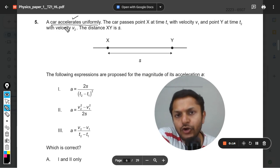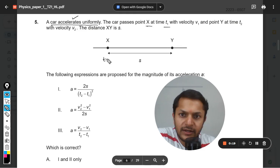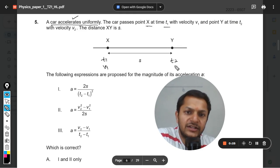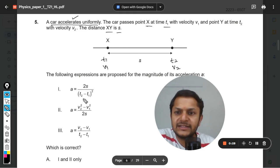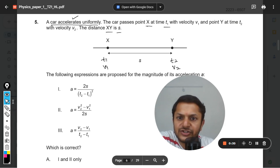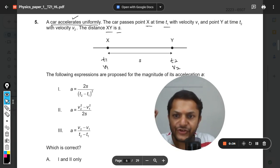The car passes point X at time t1 with velocity v1, so initial velocity is not zero. And here it is t2 and the velocity is v2. The distance XY is s. The following expressions are proposed for the magnitude of its acceleration a.